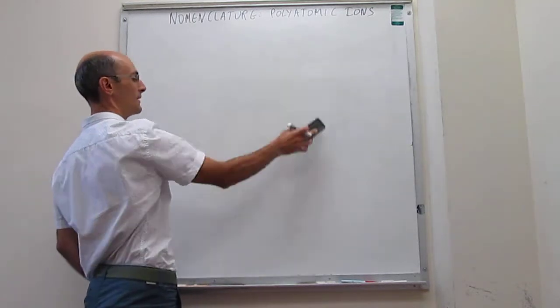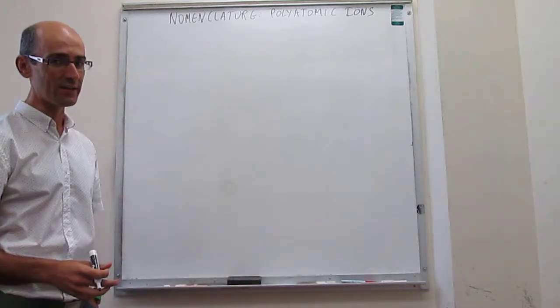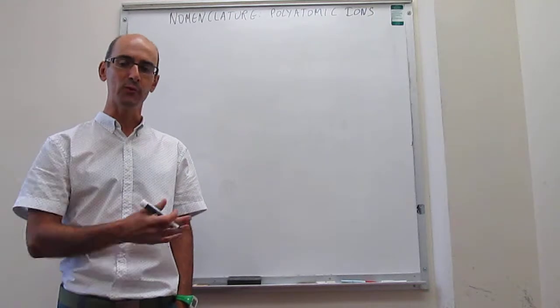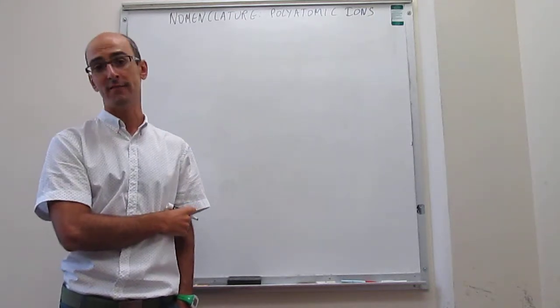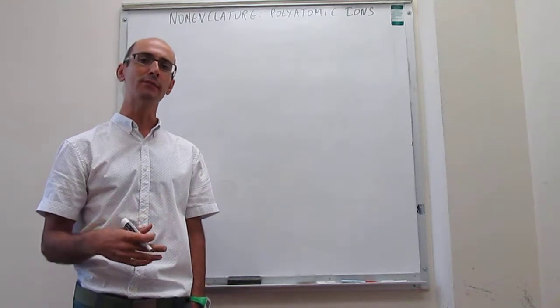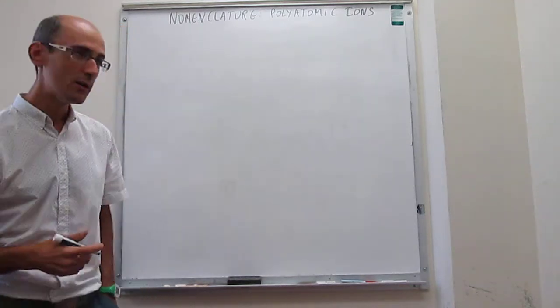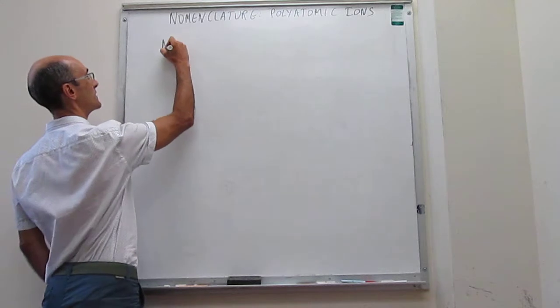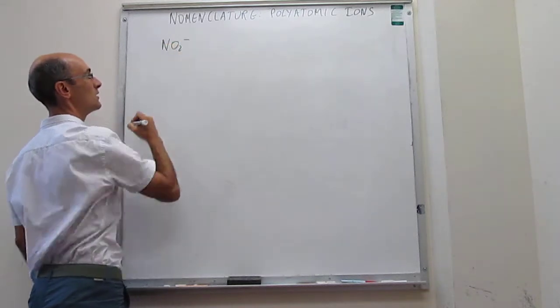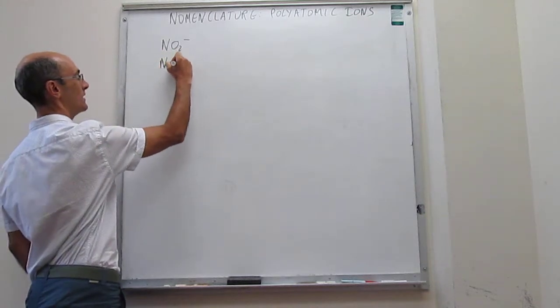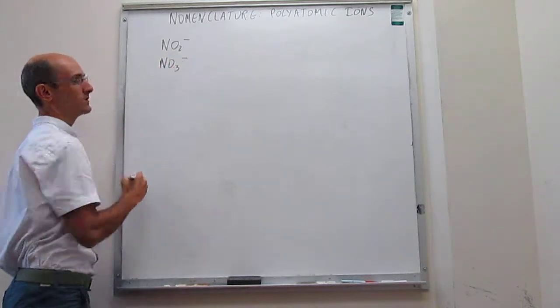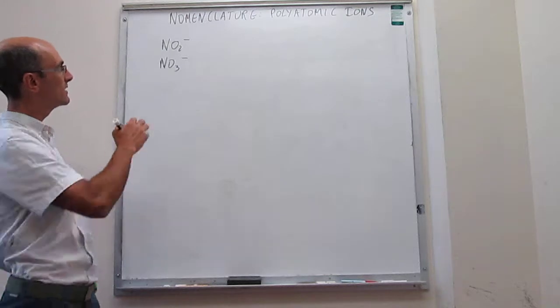Now there is a bunch of polyatomic anions that we need to remember. So what we are going to do in this video is just write them and then name them so that you start to get familiarized with those names. So we start with this ion, NO2- which is called nitrite. Then NO3- which is called nitrate.